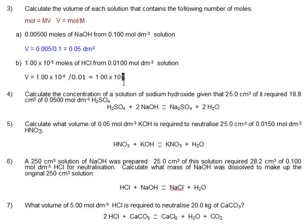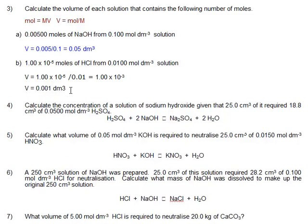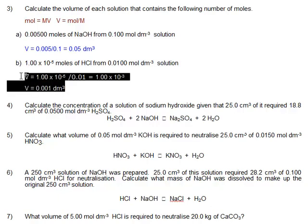Let me just put that in there. 1 times 10 to the minus 3 is 0.001, of course. V equals 0.001. And again, it's litres, dm cubed.